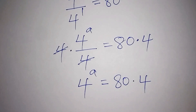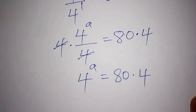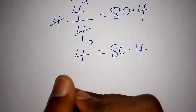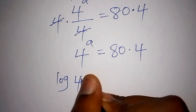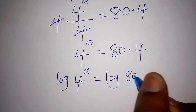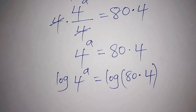So now, how do we still solve it? We still have the unknown a in the exponent. The best thing we need to do is introduce the log on both sides. So we shall have the log of 4 to the power of a equals the log of 80 multiplied by 4.